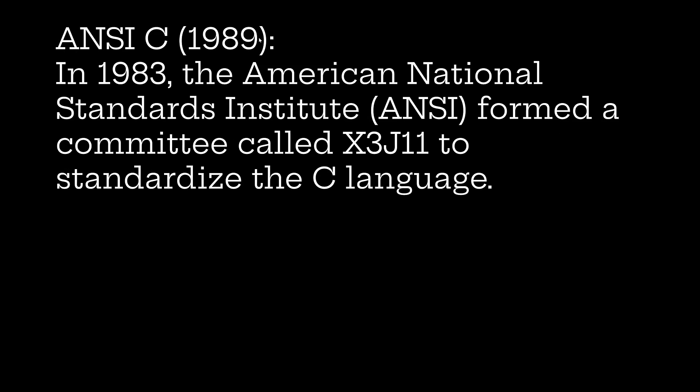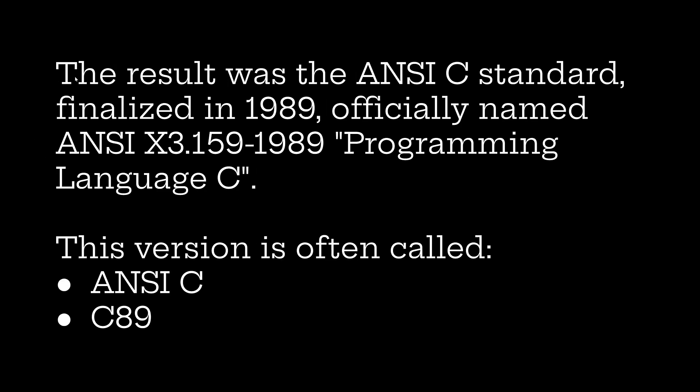Next one came is the 1989 ANSI C. In 1983, the American National Standards Institute ANSI formed a committee called X3J11 to standardize the C language. The result was the ANSI C standard finalized in 1989, officially named as ANSI X3.159-1989 Programming Language C. This version is often called ANSI C or C89. This is another version which you are having in the internet.